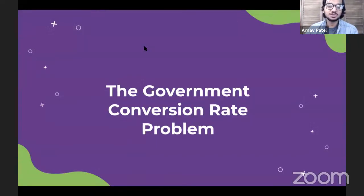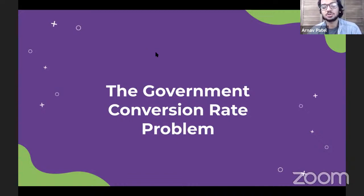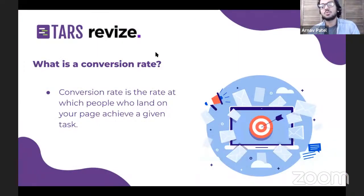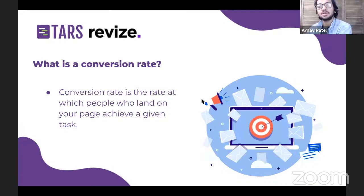Let's talk about the government conversion rate problem, because this is really what we're here to solve today. The term conversion rate isn't used often in government — it's more a marketing term — but it has significant application to government websites. A conversion rate is the rate at which people who land on your page achieve a given task. Most people who land on a city's website are looking to achieve a task or find a piece of information, and a conversion rate tells you what proportion of those people actually accomplish that.